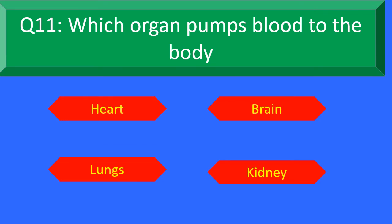Moving to question number 11. Which organ pumps blood to the body? Option A: Heart, Option B: Brain, Option C: Lungs, and Option D: Kidney. Your time starts now.